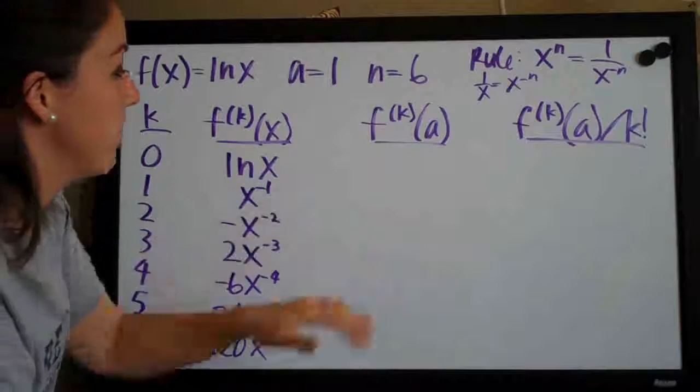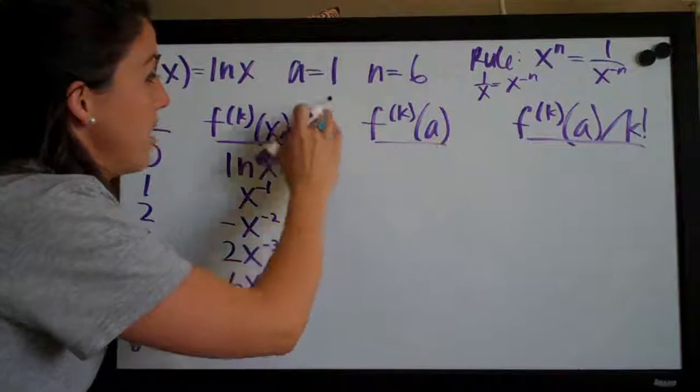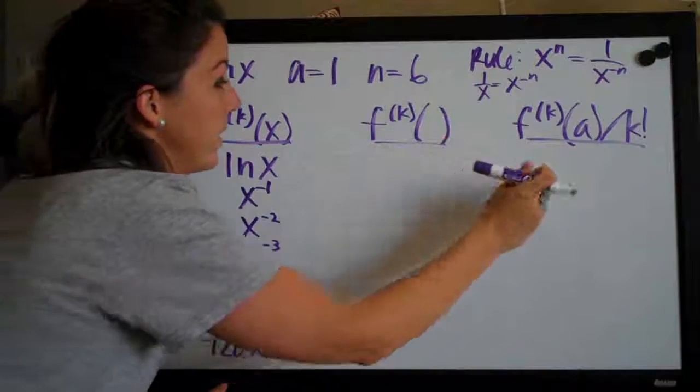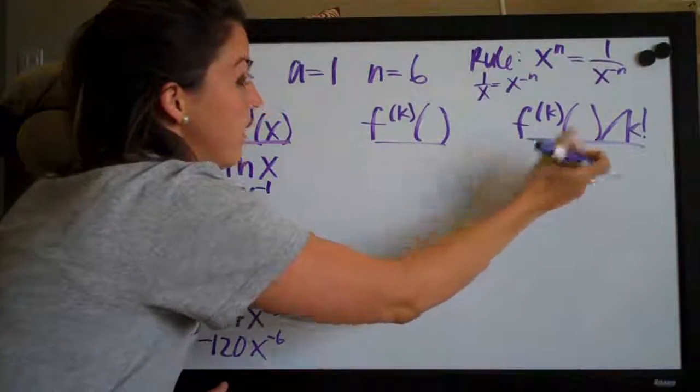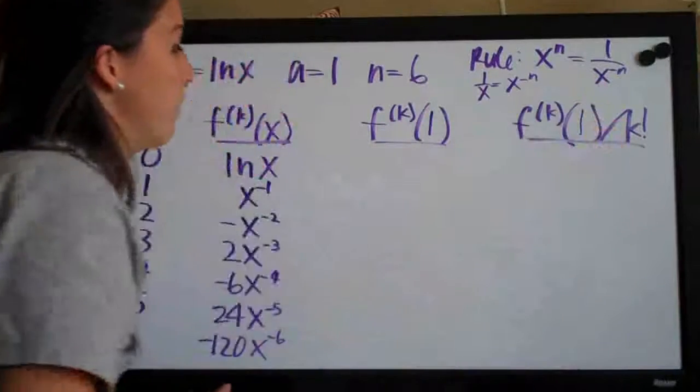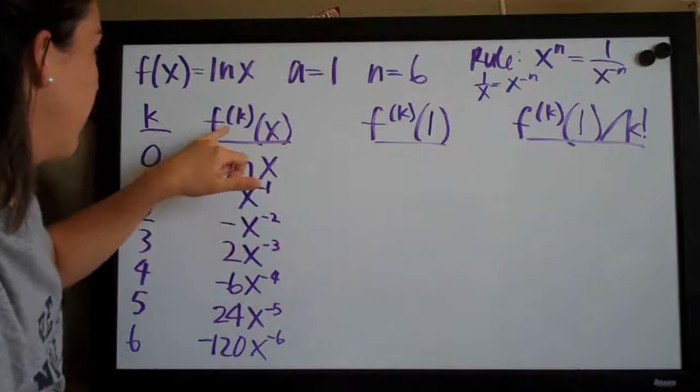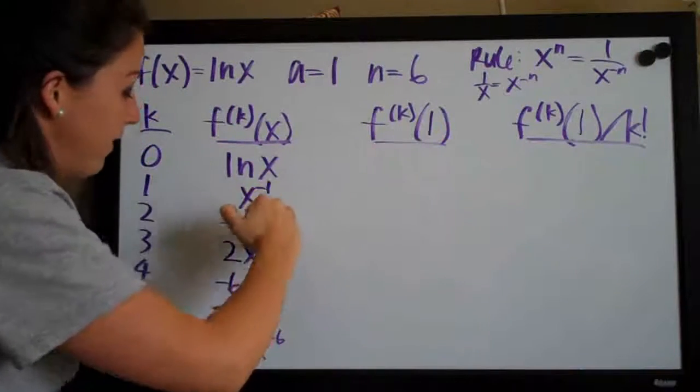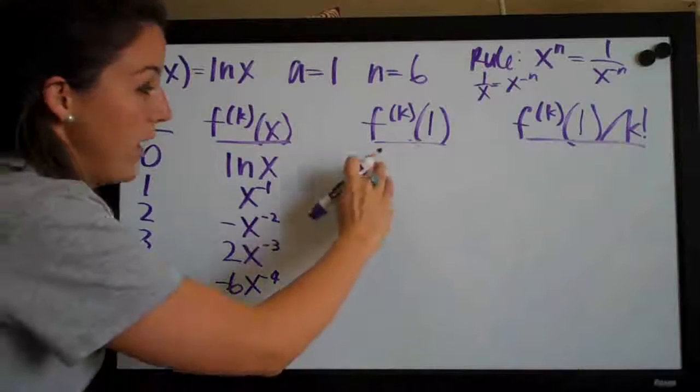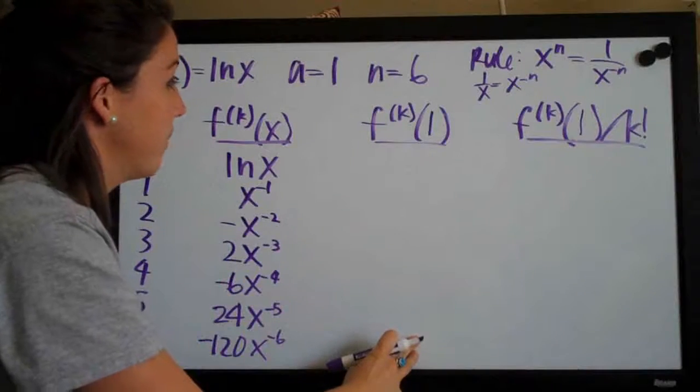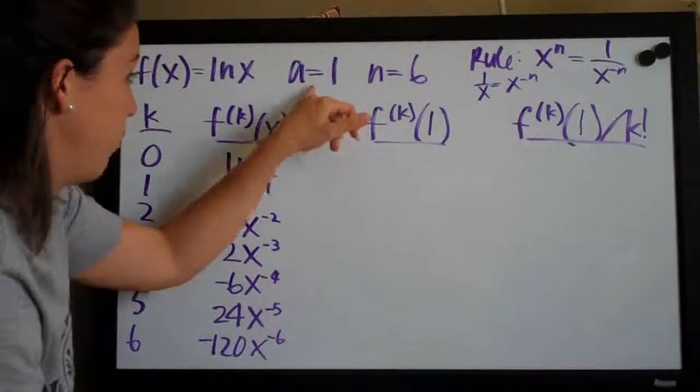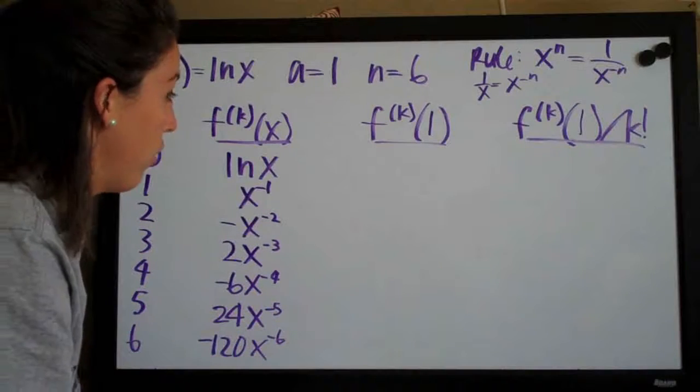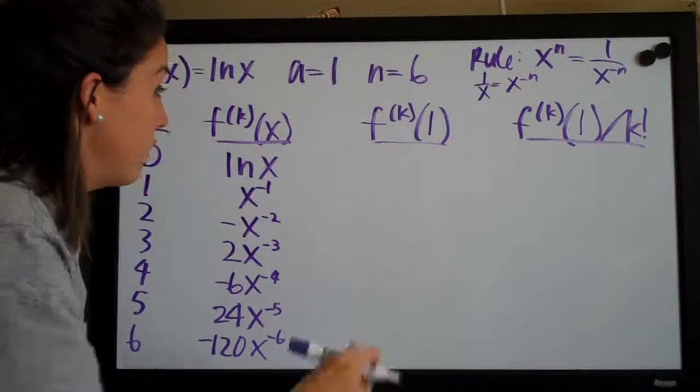The third column here, you can see we have f^(k) of a and we have a defined as 1. So we can actually go ahead and write our 1 in here. This is also an a over here. So we can go ahead and write 1. Basically what this means is we have here our function f^(k). We're just going to plug 1 into each of these functions here and write the answer in this column. So we're just plugging 1 into the function, whatever a is. So if a had been 4, we'd be plugging in 4 to each of these and writing the answer here. So in this case, we'll go ahead and plug in 1.